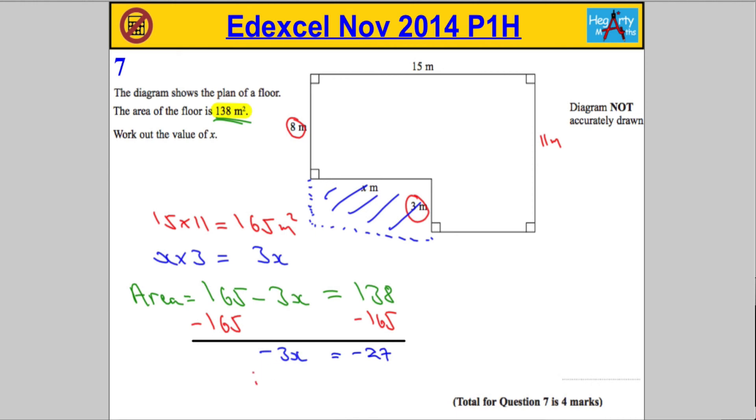So negative 3x is negative 27 and we're going to divide both sides by negative 3. And we should get our answer that x must be equal to 9, because a negative divided by a negative is always positive. So x equals 9 and that should be good for our four marks.